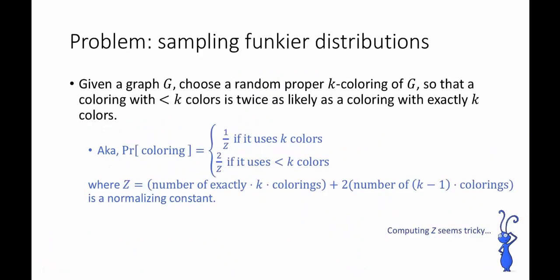In the previous example, we figured out how to set up Markov chain Monte Carlo for sampling a uniformly random proper k coloring of a graph. But in some sense, we got lucky — the first Markov chain we thought of happened to give us the stationary distribution we wanted. What happens if we don't get so lucky? That is, what if the distribution pi that I care about is not so nice, or if I can't figure out a Markov chain that has it as a stationary distribution?